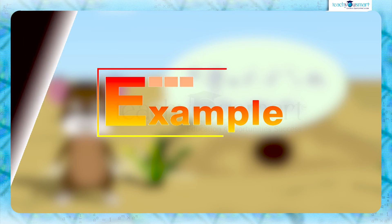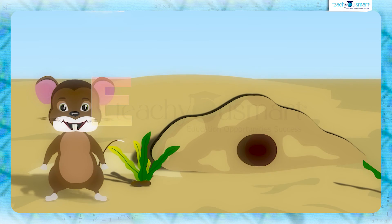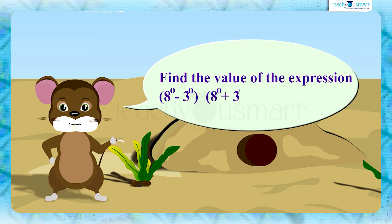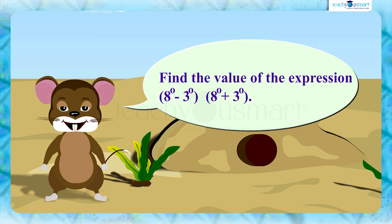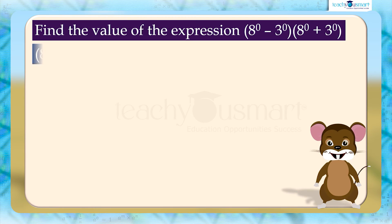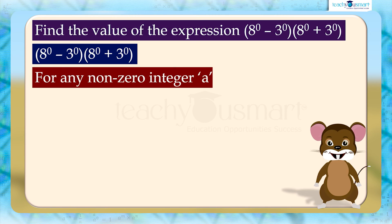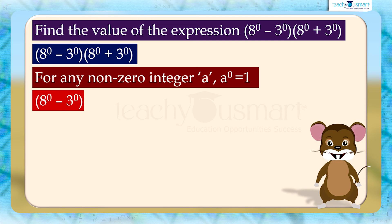Let's see another example. Find the value of the expression: (8 raised to 0 minus 3 raised to 0) multiplied by (8 raised to 0 plus 3 raised to 0). Since a raised to 0 equals 1, this equals (1 minus 1) multiplied by (1 plus 1).